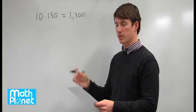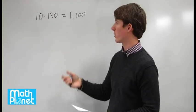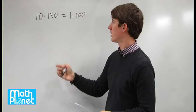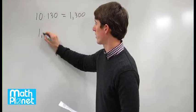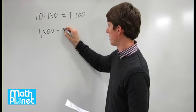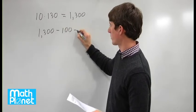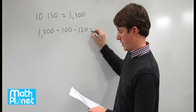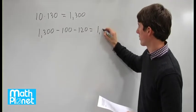Now we want to remove two numbers that we didn't know were previously there, 100 and 120. So if we take this number, 1,300, and we subtract those two numbers, 100, and we subtract 120, that gives us a value of 1,080.